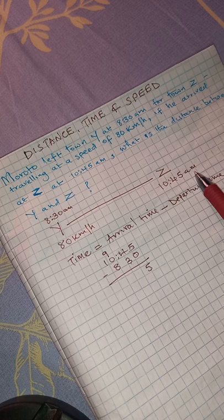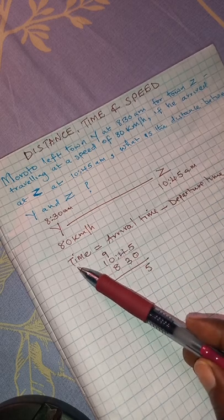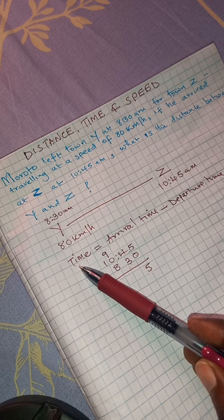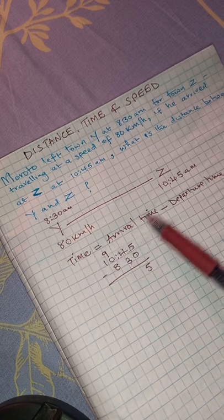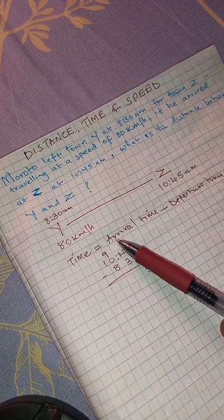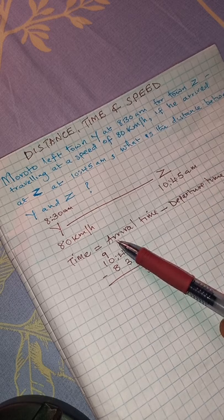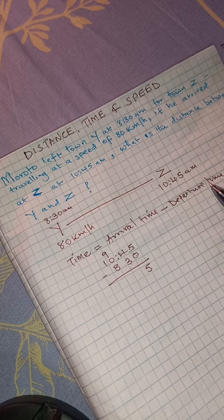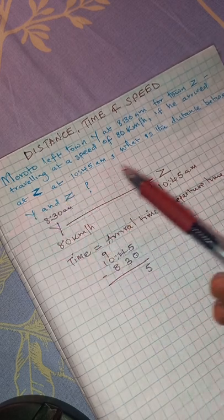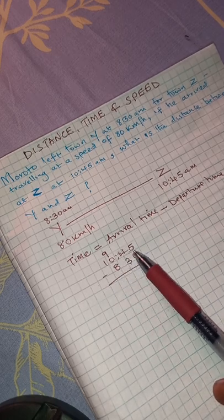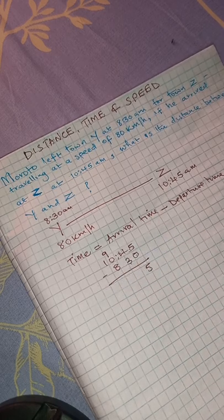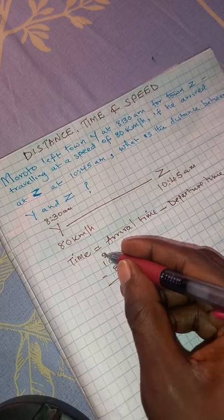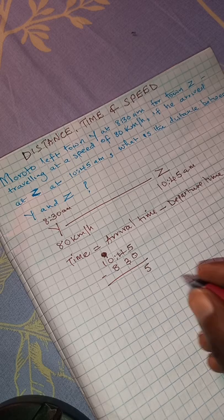Here we are first of all going to calculate time, time spent on the way. How do we get it? By subtracting departure time from arrival time. Arrival time is the time he arrived at Z. Departure time is the time he left town Y. Therefore, we are going to say 10:45 AM minus 8:30 AM.